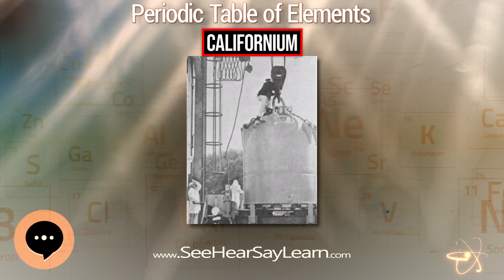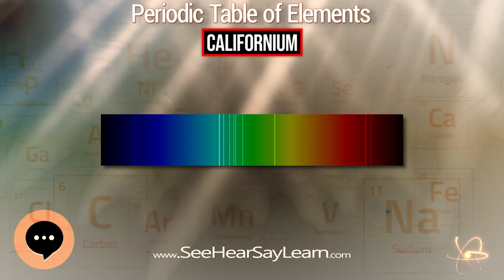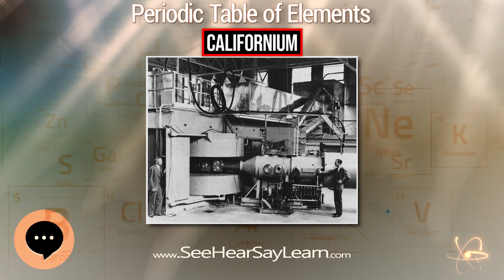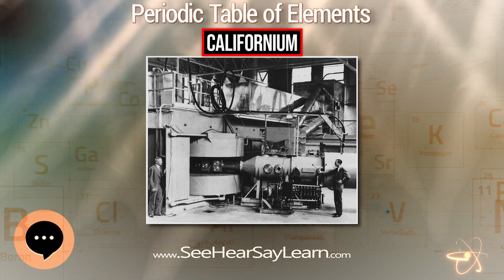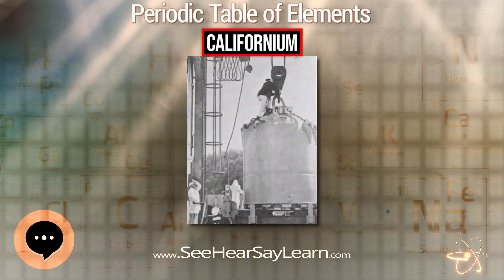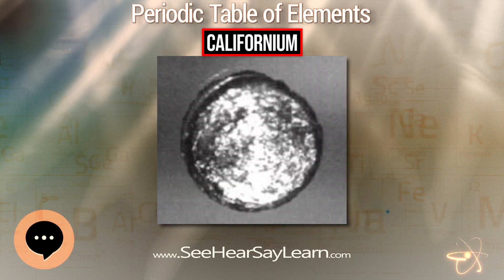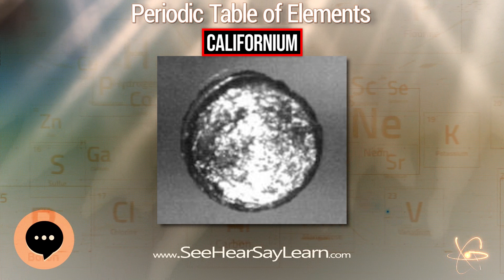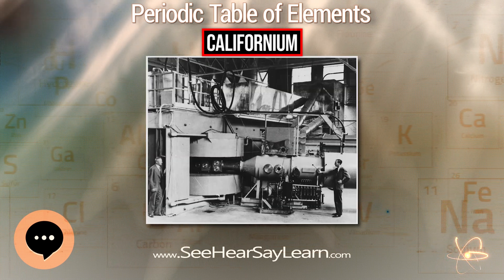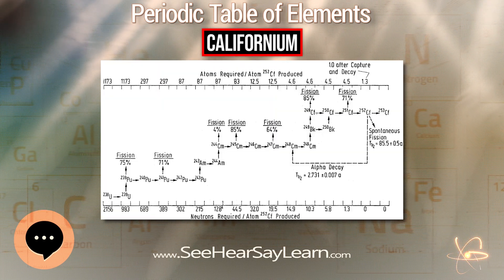Californium-252 has a number of specialized applications as a strong neutron emitter; each microgram of fresh californium produces 130 to 39 million neutrons per minute. This makes californium useful as a neutron startup source for nuclear reactors and as a portable neutron source for neutron activation analysis to detect trace amounts of elements in samples. Neutrons from californium are also employed as a treatment for certain cervical and brain cancers where other radiation therapy is ineffective.